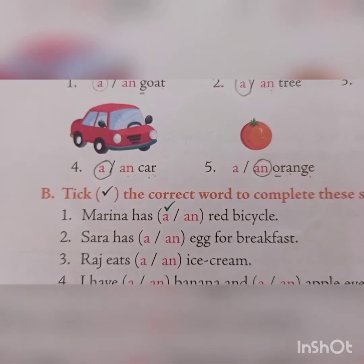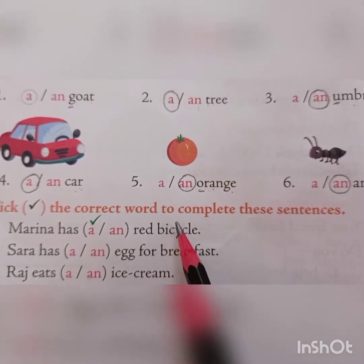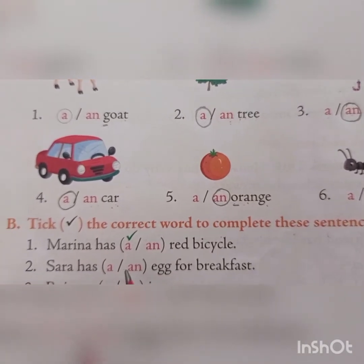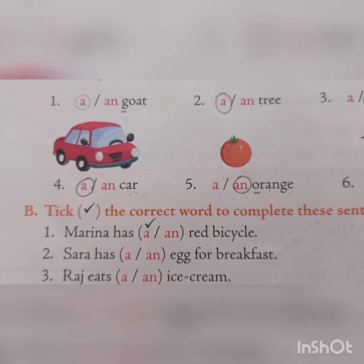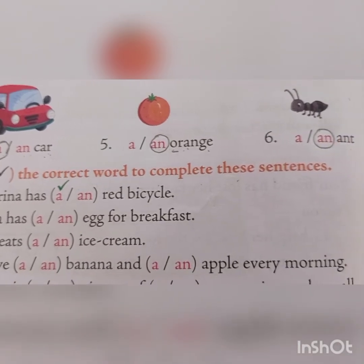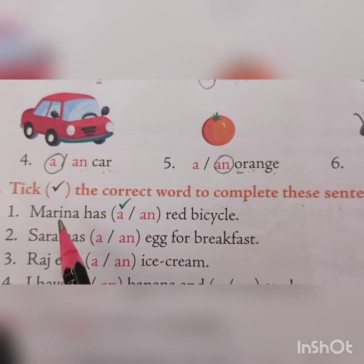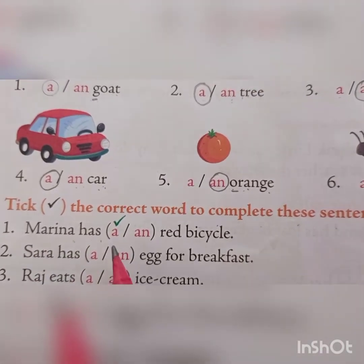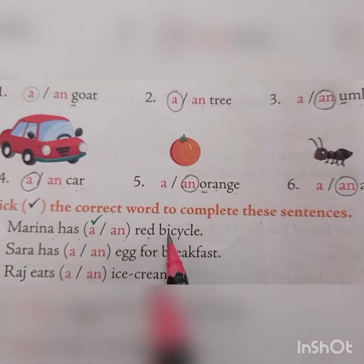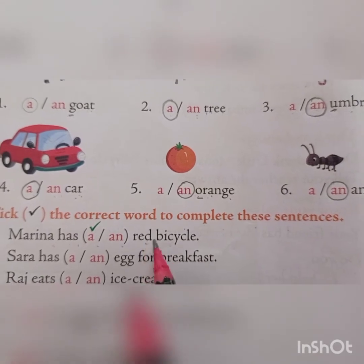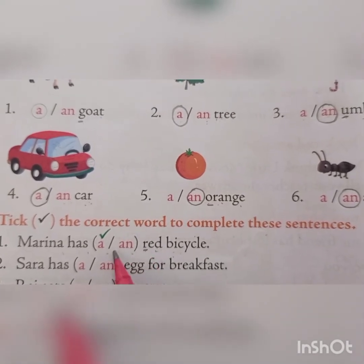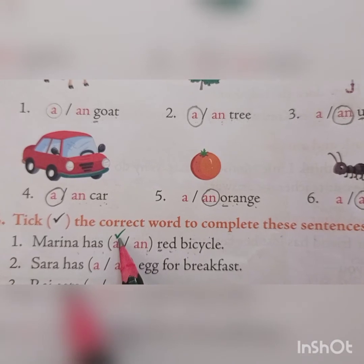Our next exercise: tick the correct word to complete these sentences. This is your homework — do you do it in class? Okay, let's do it in class. Marina has A red bicycle. Red starts with a consonant, so we use 'a.' This one is done for you.